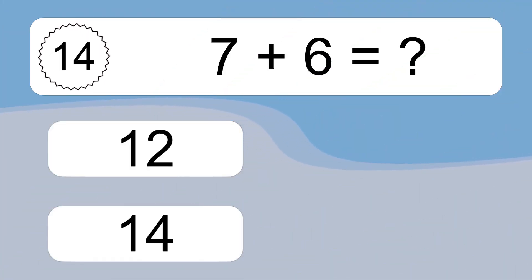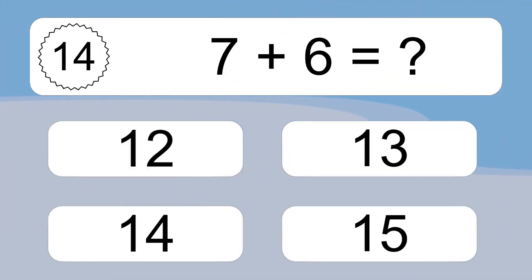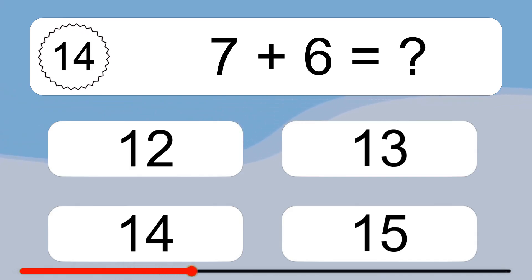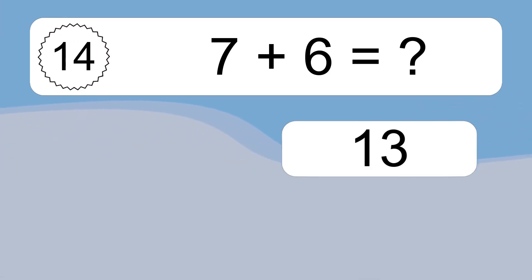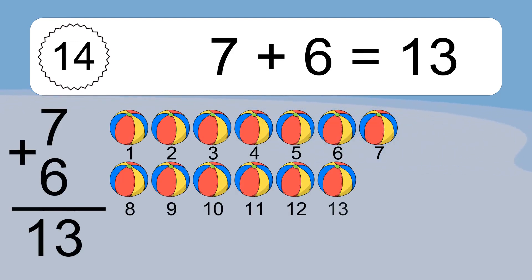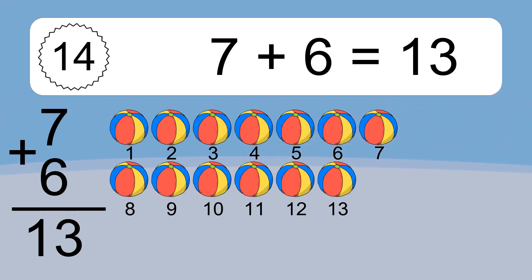7 plus 6 equals what? 7 plus 6 equals 13. Let's count it: 1, 2, 3, 4, 5, 6, 7, 8, 9, 10, 11, 12, 13.